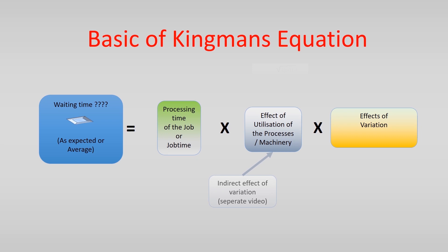We already discussed the effects of utilization of the process and we saw that variation has a large effect in combination with a high utilization. We also saw what the effects are if you add parallel servers or parallel processes. This provided the indirect effects of variation through the utilization.